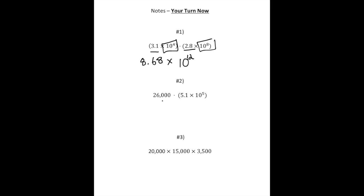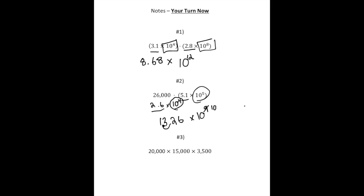For number two, you had to first convert 26,000 into scientific notation — that would be 2.6 times 10 to the fourth power. When you did 2.6 times 5.1, that gives you 13.26. And then multiplying 10 to the fourth times 10 to the fifth gives you 10 to the ninth. But we're not quite done yet because 13.26 is greater than 10, so it's not written in proper scientific notation. We need to divide 13.26 by 10 and increase the exponent by one, giving us 1.326 times 10 to the tenth power.